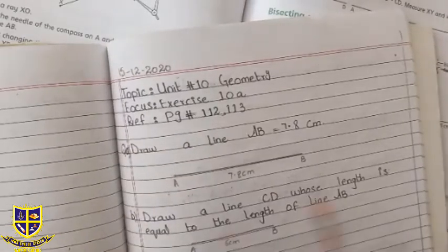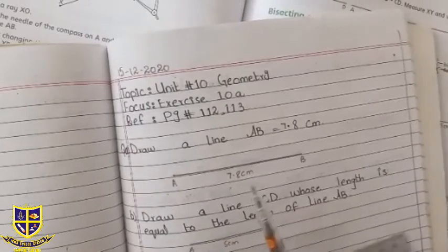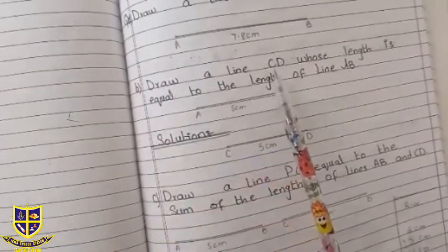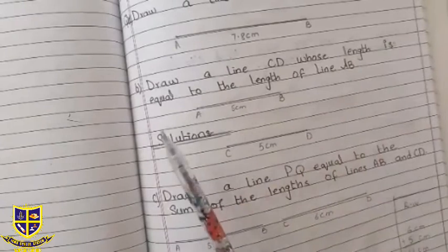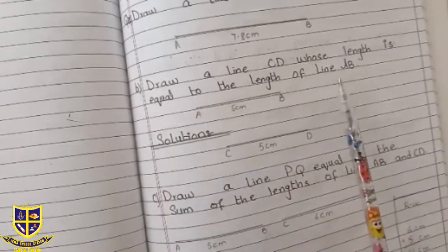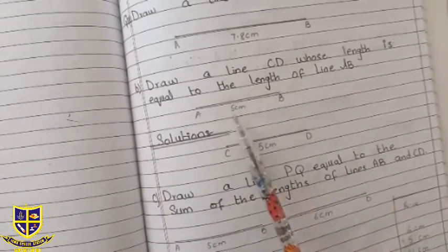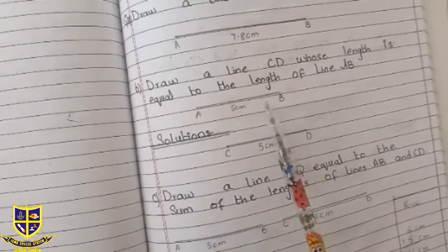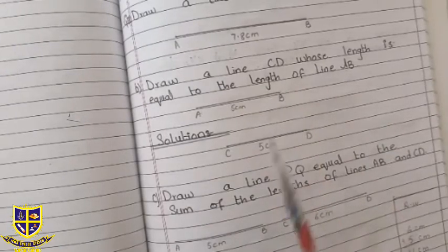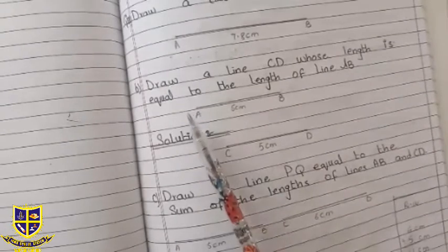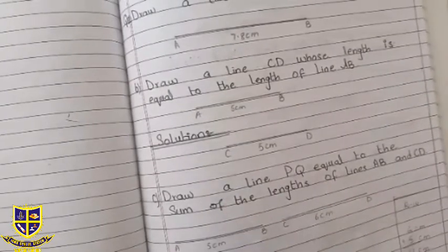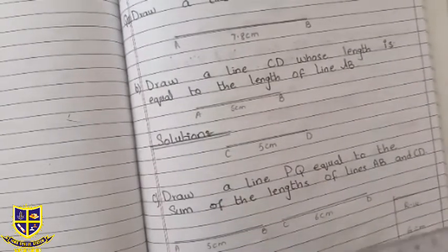Starting point and ending point, you need to draw a line CD whose length is equal to the length of line AB. AB line is given in question, we have drawn a CD line in equal length. Here we have 5 cm.